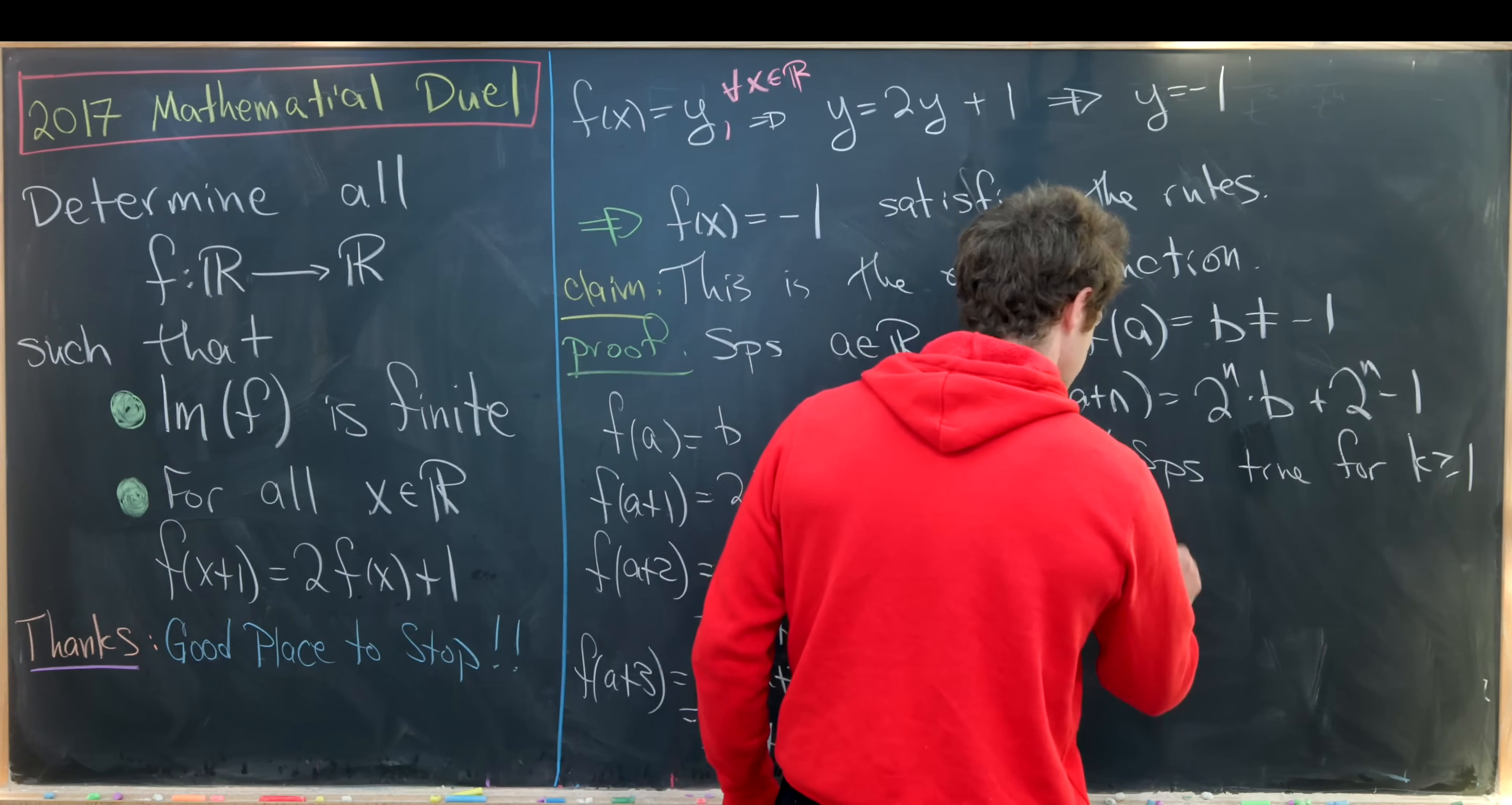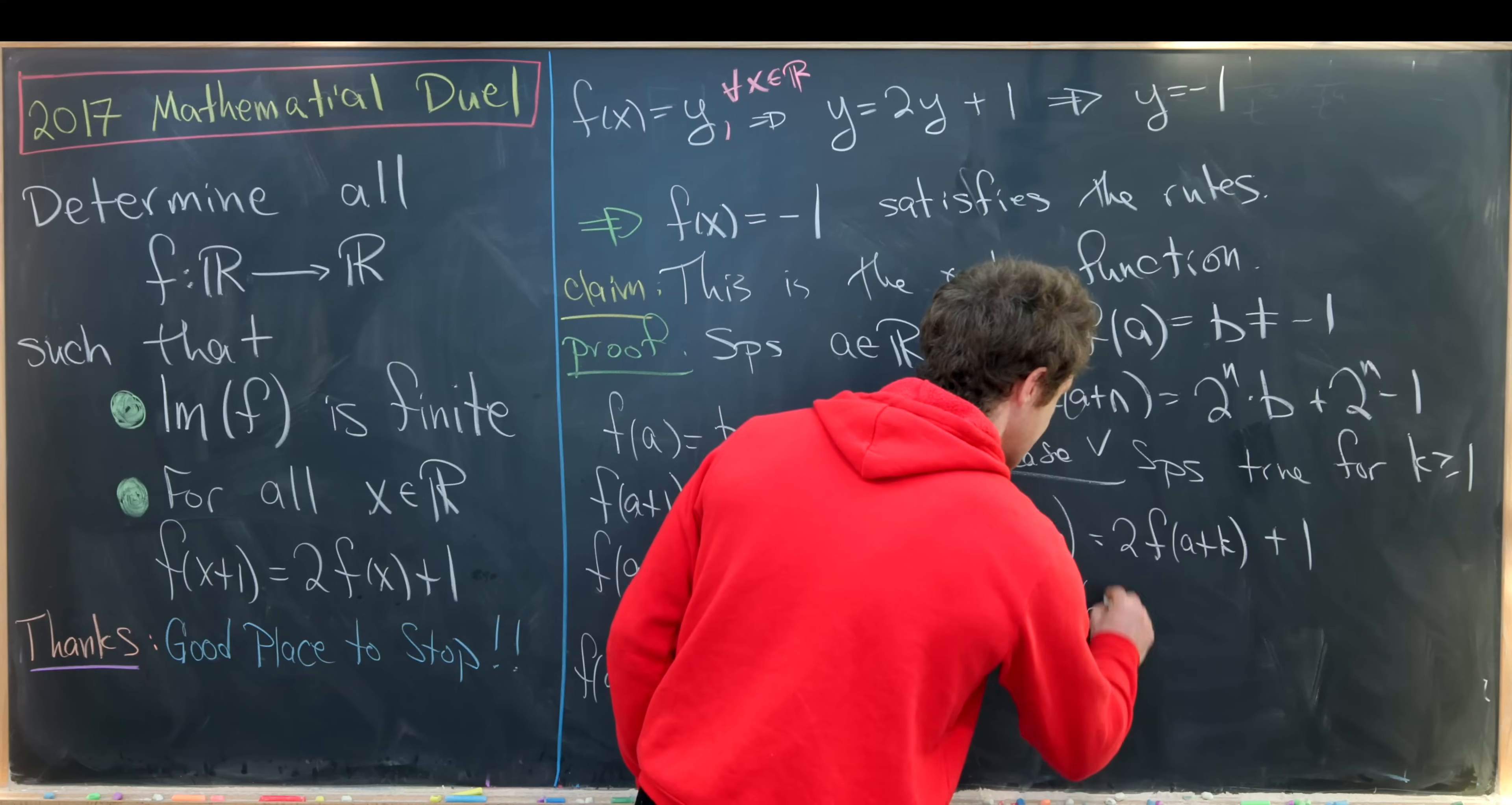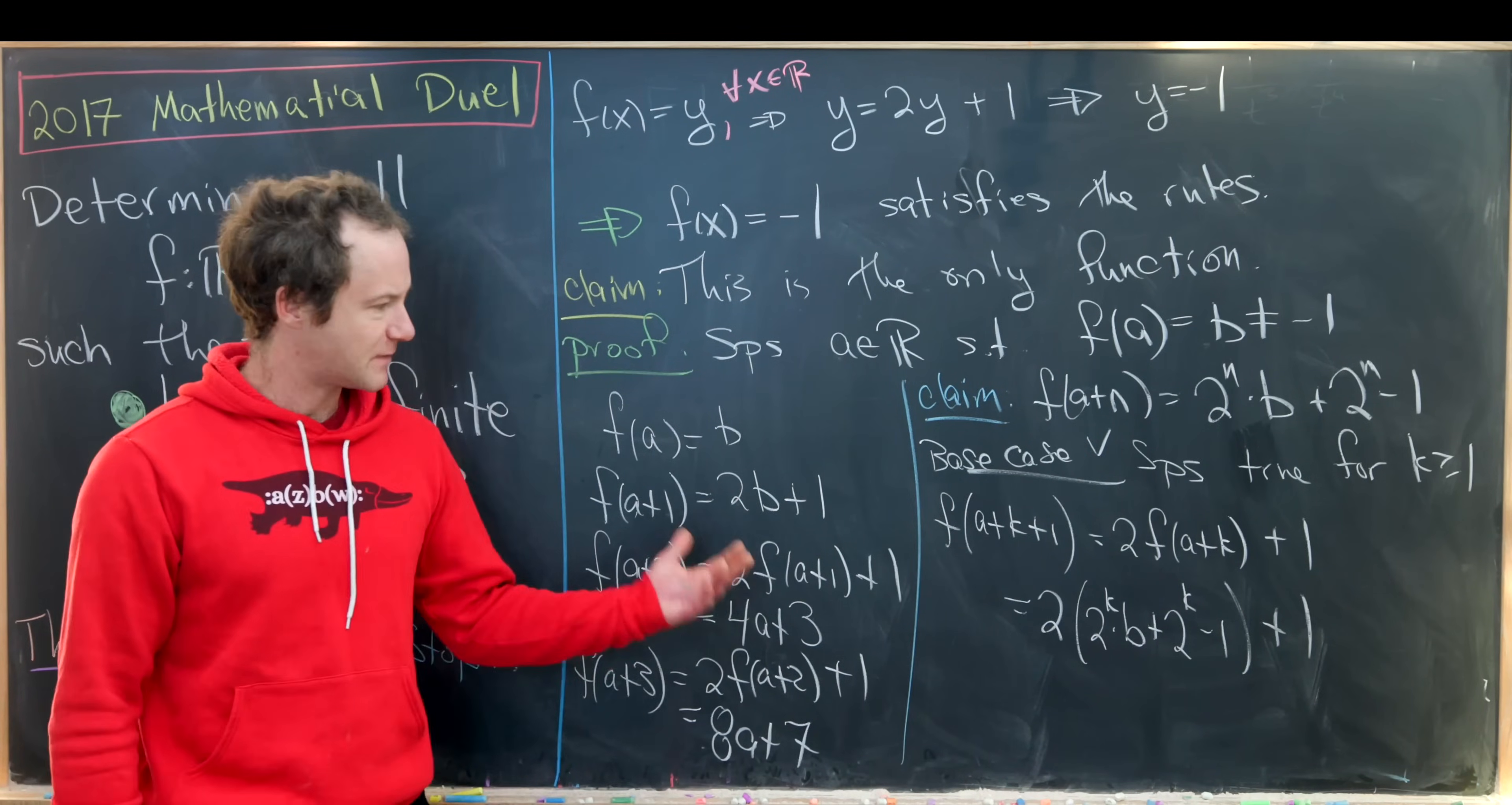But that is 2 times 2^k times b plus 2^k minus 1 plus 1. Okay, but that's shaping up to